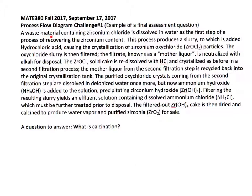We have a waste material that contains zirconium chloride dissolved in water as the first step to recovering this content. This process produces a slurry to which acid is added, causing crystallization of zirconium oxychloride.